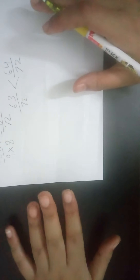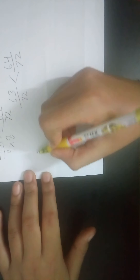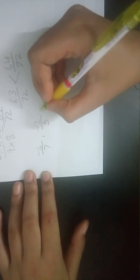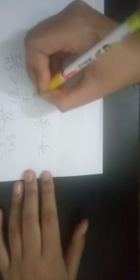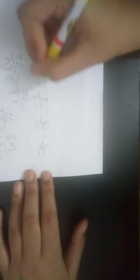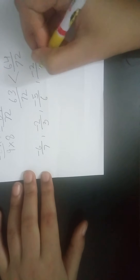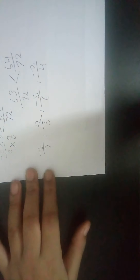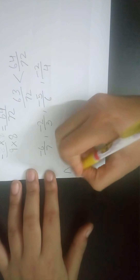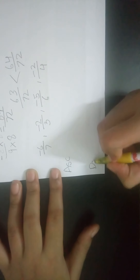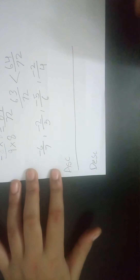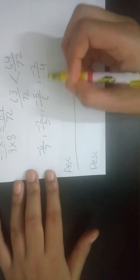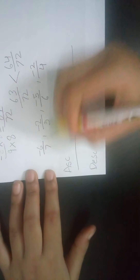Now we'll learn how to arrange rational numbers in ascending and descending order. I'll give some numbers: minus six by seven, minus two by three, minus five by six, and minus two by four. We need to arrange these in both ascending and descending order, so first we must convert all of them to a common denominator by finding the LCM.